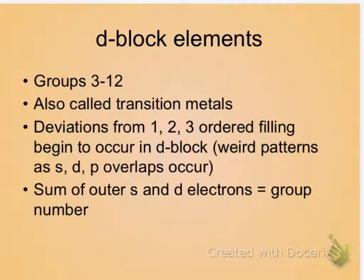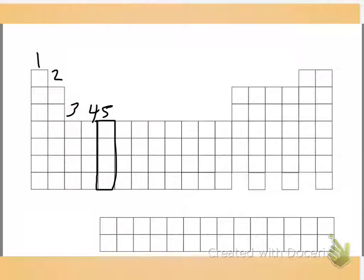Look at group 5. How many D electrons are there in any of them? It should be three. Whether we've gone 4S1, 4S2, 3D1, 2, 3 — or 5S1, 5S2, 4D1, 2, 3 — the group number is equal to the sum of those S and D electrons. That becomes important when we start to talk about the way that they form ions.